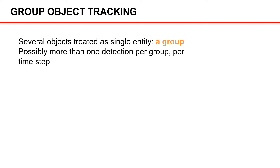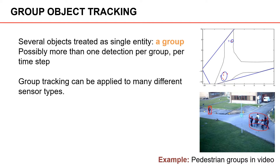The third type of tracking is called group object tracking. For this type, we have several objects that are treated as a single entity — a group object. Often, each member of the group can be detected in the sensor data, and therefore there is a possibility of multiple detections per group. One example of group object tracking is shown here: a camera was positioned overlooking a footpath and pedestrians were detected in the image data.